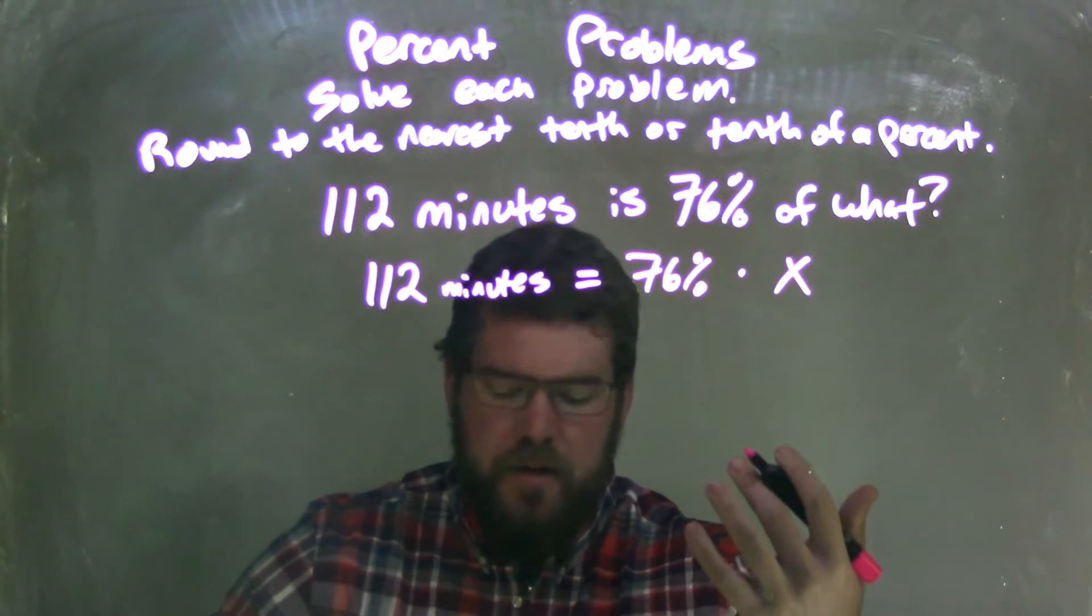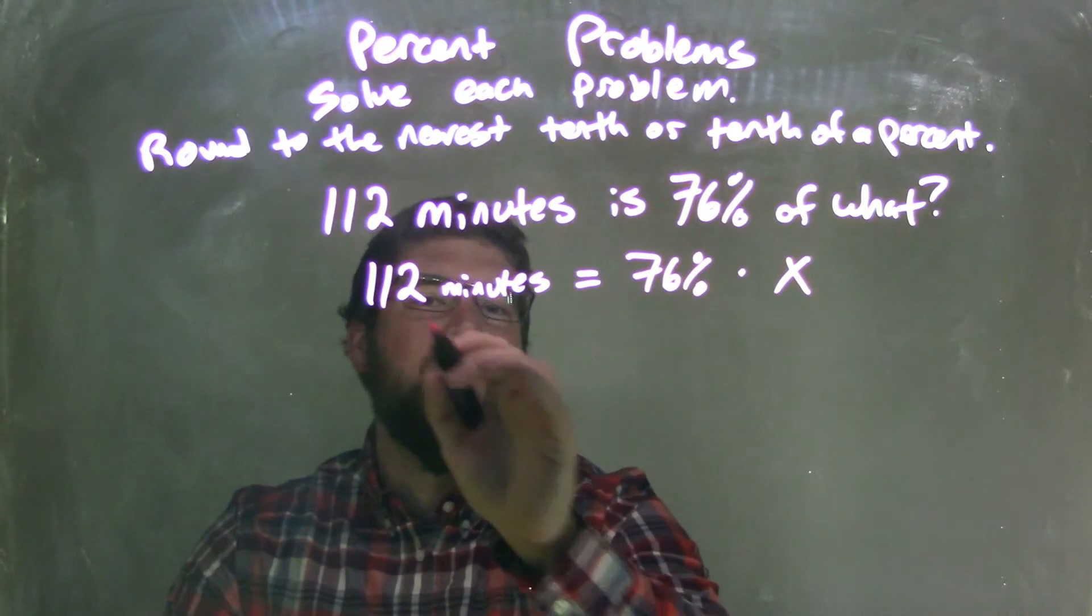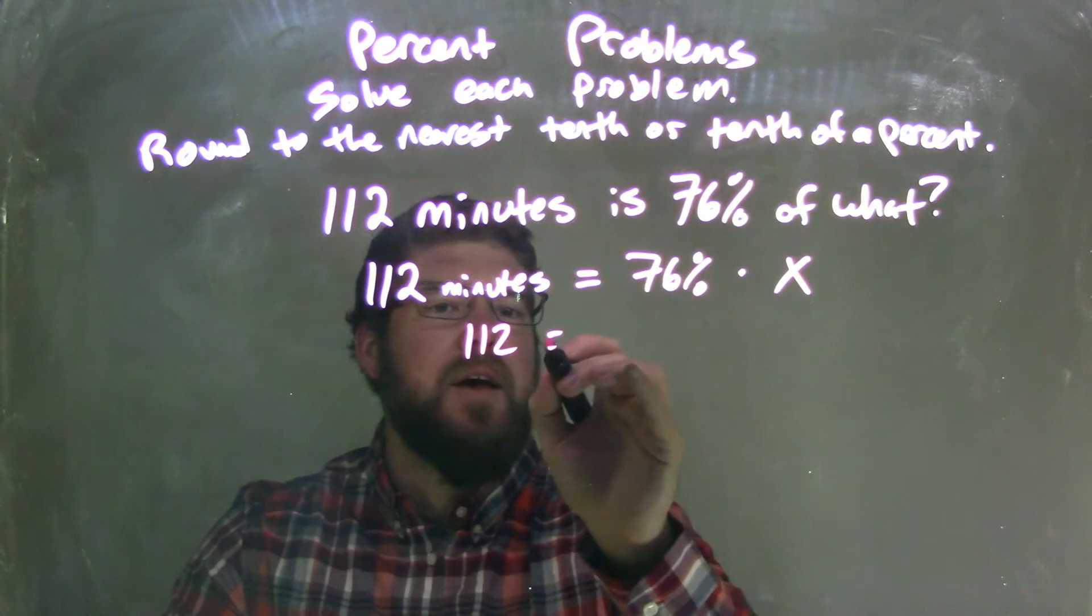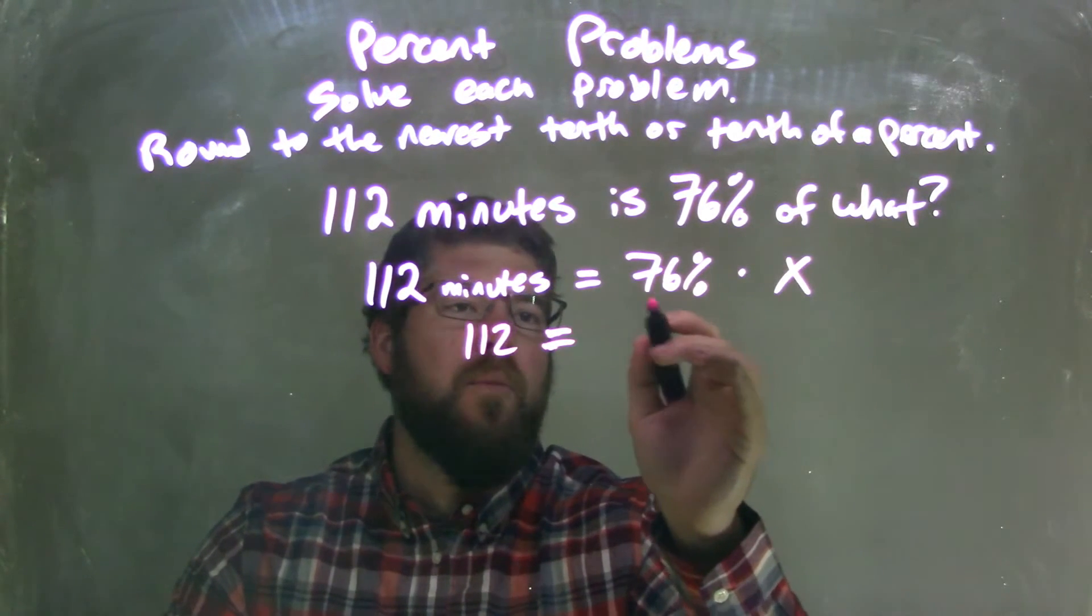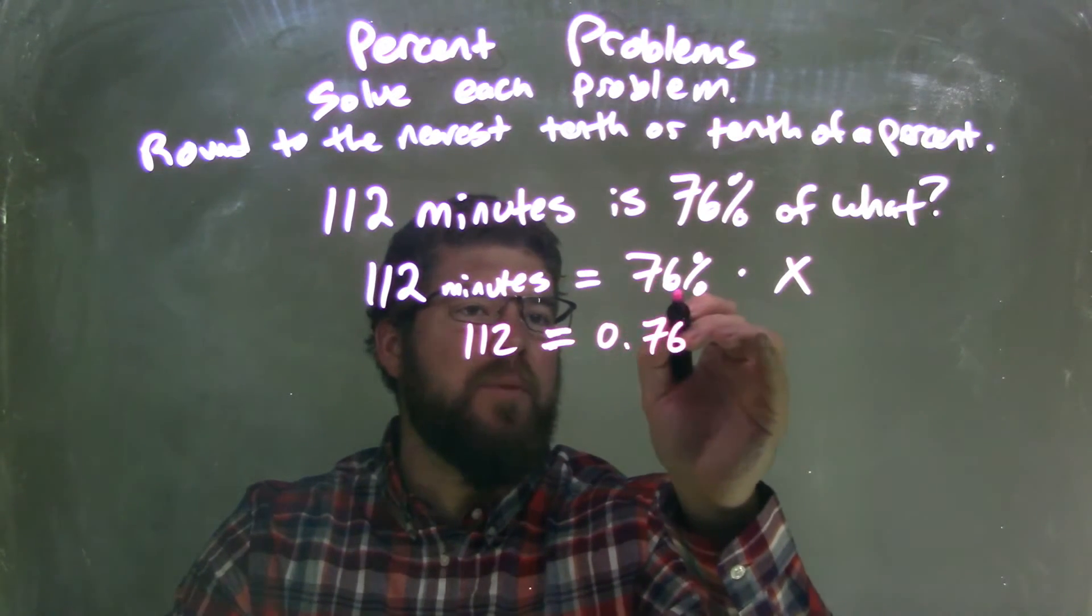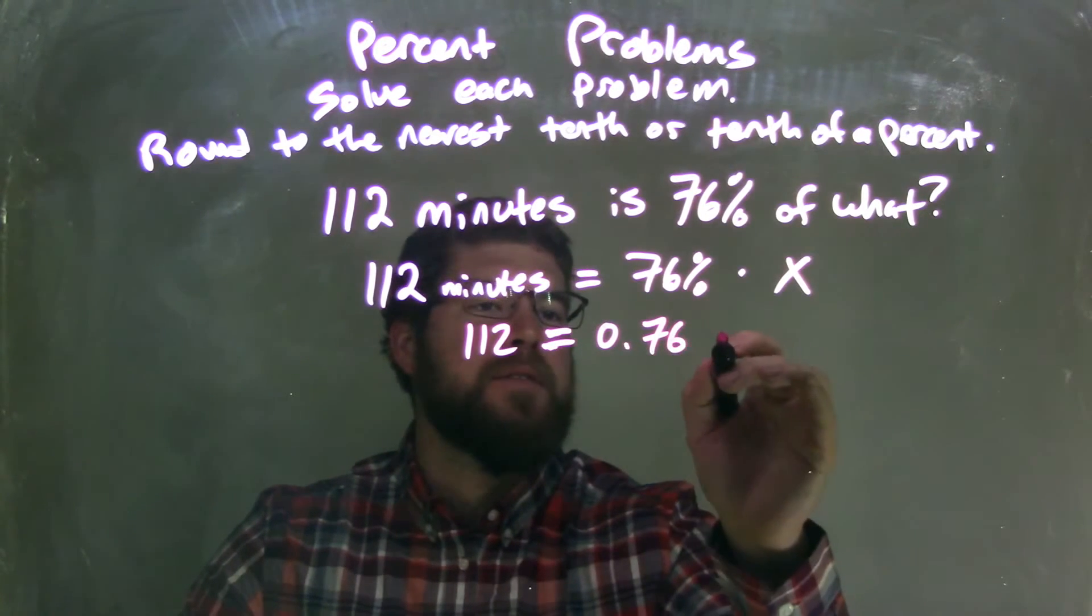Now our units are minutes here, so let me rewrite this just with our numbers. We have 112 equals, now with 76% as a decimal, we make it 0.76—we move the decimal place over two units to the left—times x.